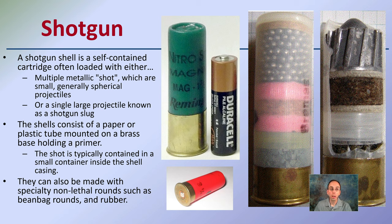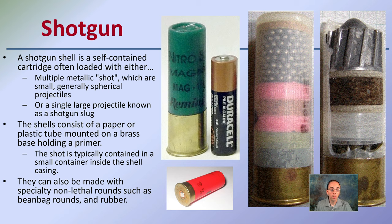With a shotgun shell — a self-contained cartridge — the shell is often loaded with either multiple metallic shot (small spherical BBs) or a large single projectile known as a slug. These shells consist of a paper and plastic tube with a brass base to hold the primer. Shotgun shells tend to be a much larger diameter, as you can see compared to a double-A battery here. They can also be made for non-lethal rounds, such as beanbag rounds or rubber rounds.